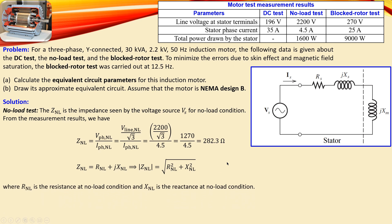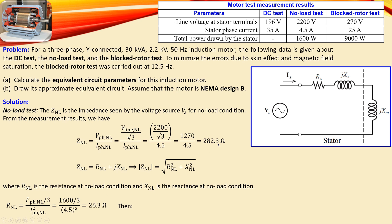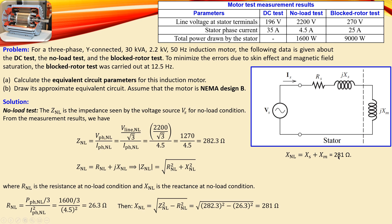The total power drawn by the stator under no-load is a three-phase value, so we divide by three to get the per-phase power of 1600 W. Using that per-phase power and the phase current, we calculate the no-load resistance. With the impedance magnitude and resistance known, we find the no-load reactance Xnl = 281 Ω using the Pythagorean relationship.